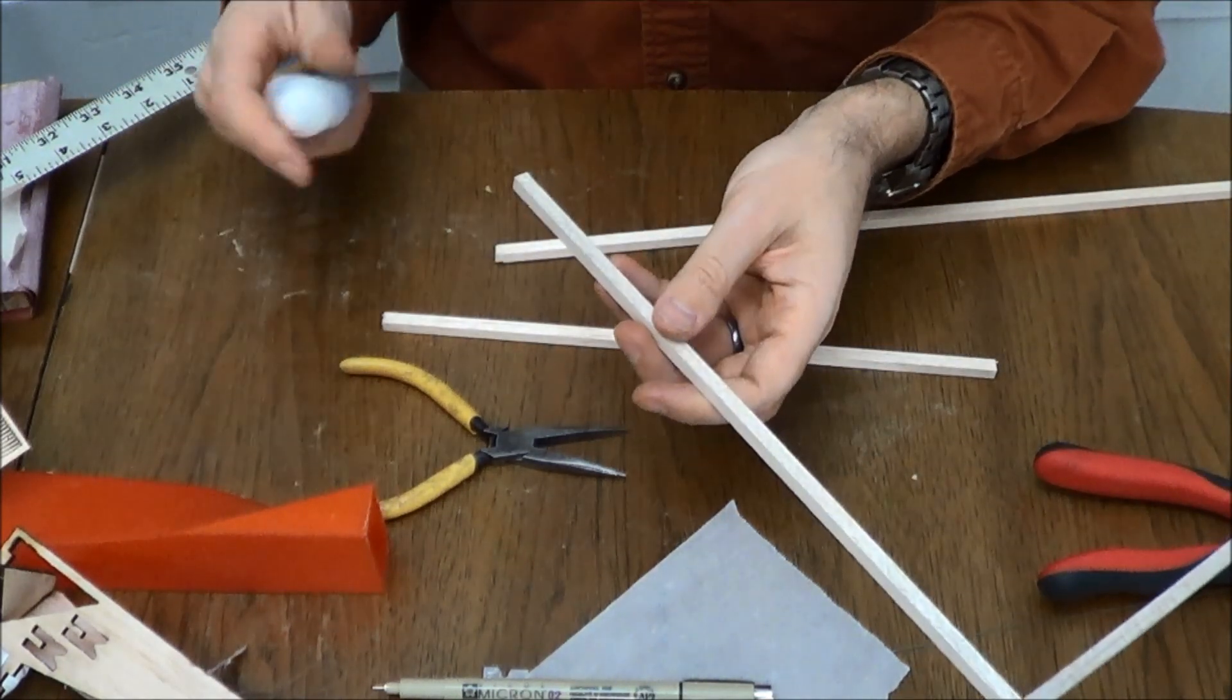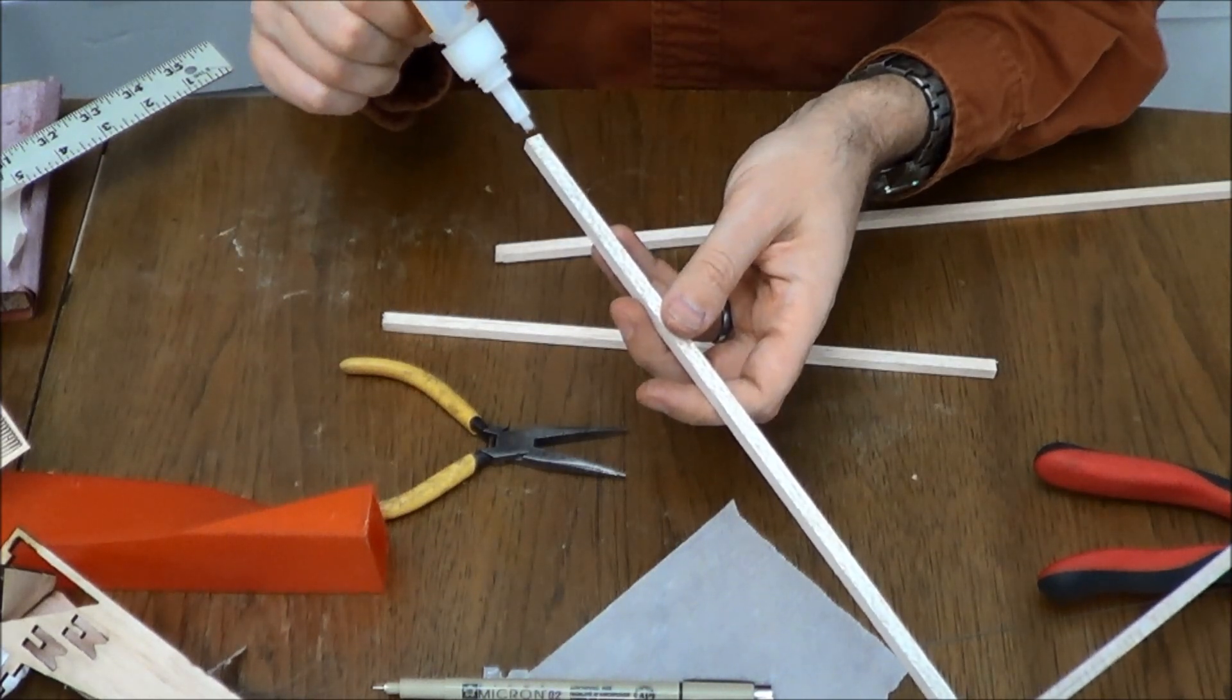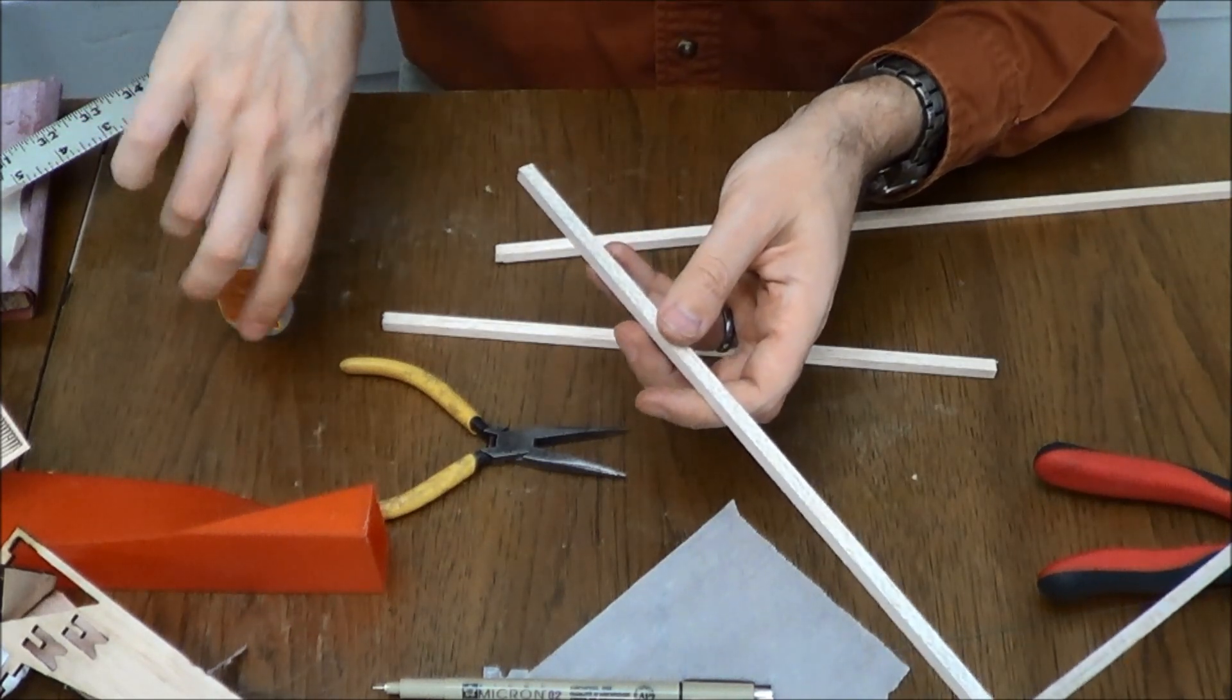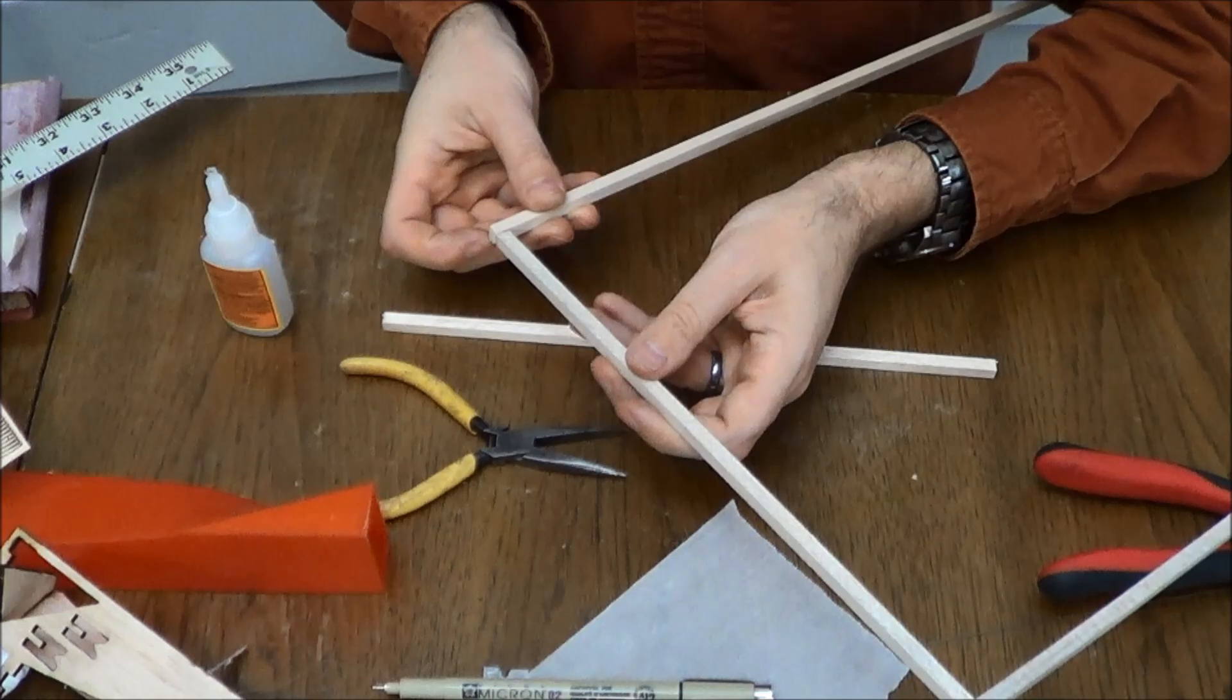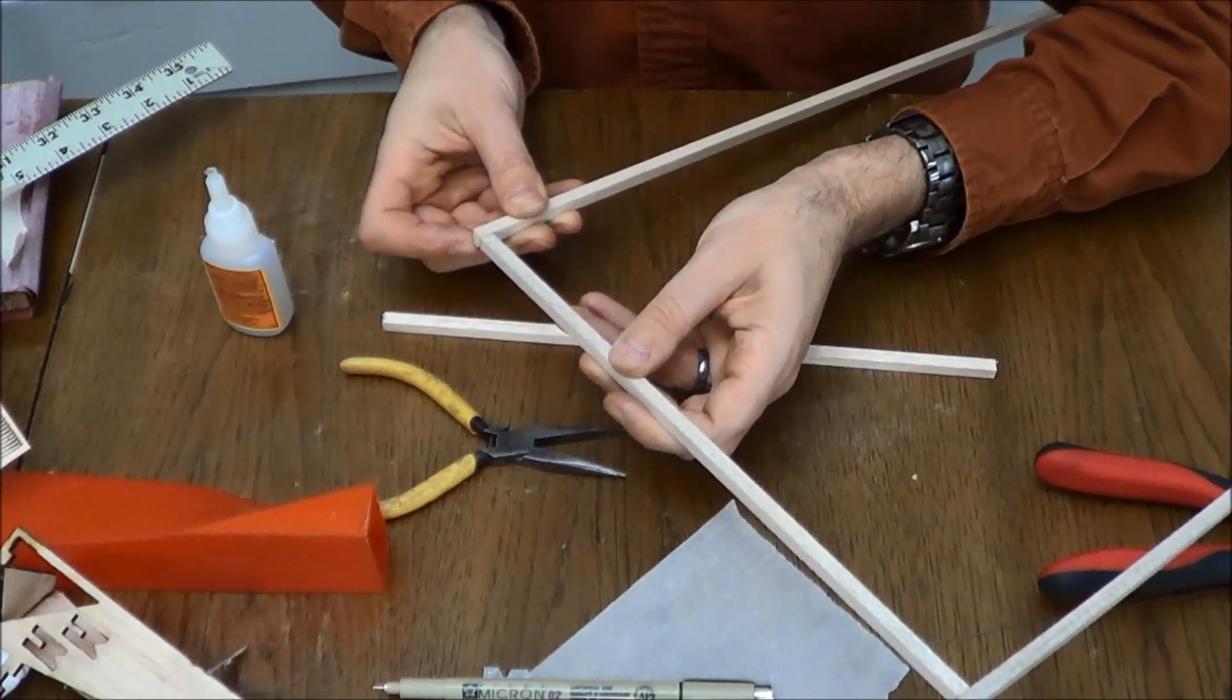We'll glue the other long one up to the other end of this. It doesn't have to be super accurate but you want it to be fairly square.